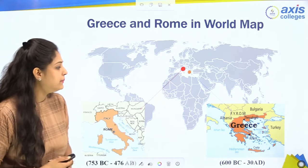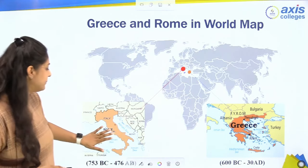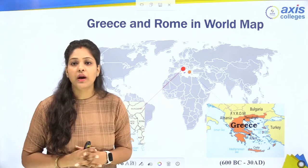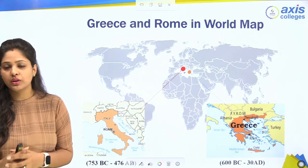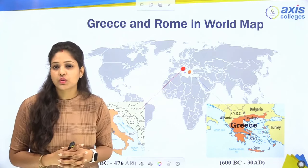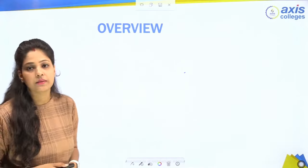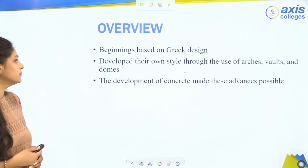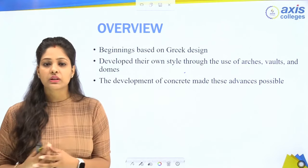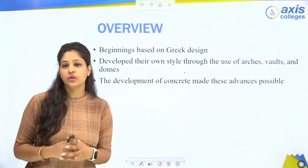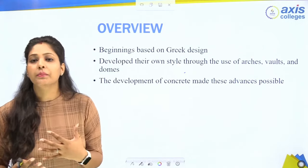If we look at a world map, we can see Greece and Rome. The distance between Rome and Greece is around a thousand kilometers, but this architecture was influenced by one another, so we will see the similarities in both. The Romans' basic beginning was based on Greek design, and slowly they developed their own design.